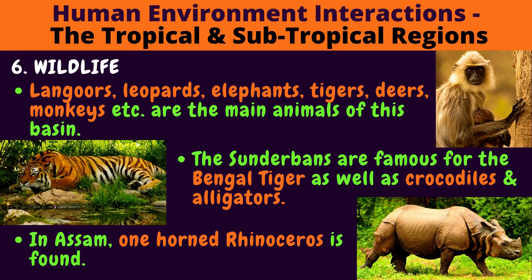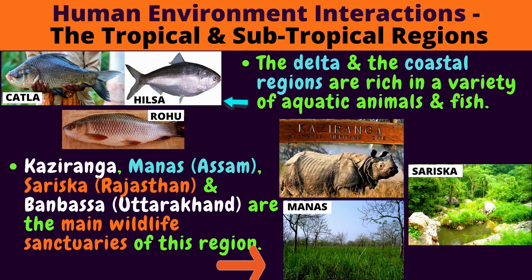Wildlife: Langurs, leopards, elephants, tigers, deer and monkeys are the main animals of this basin. Can you see the picture of a langur? The Sundarbans are famous for the Bengal tiger as well as crocodiles and alligators. Can you see the picture of the Bengal tiger? In Assam, the one-horned rhinoceros is found. The delta and coastal regions are rich in a variety of aquatic animals and fish.